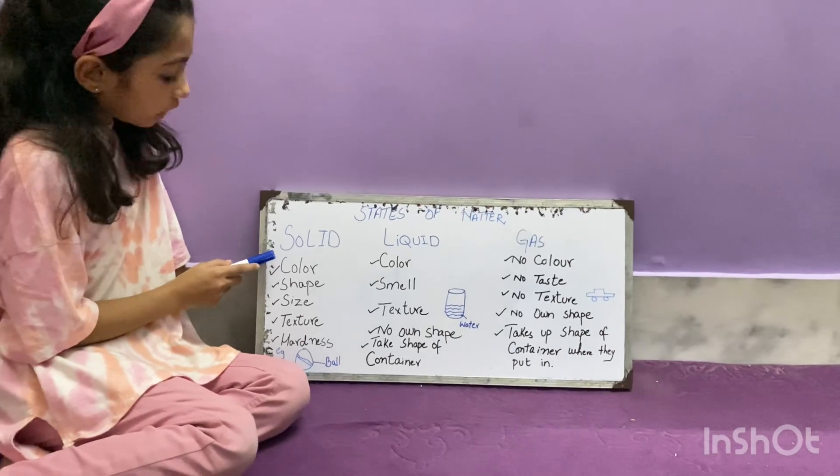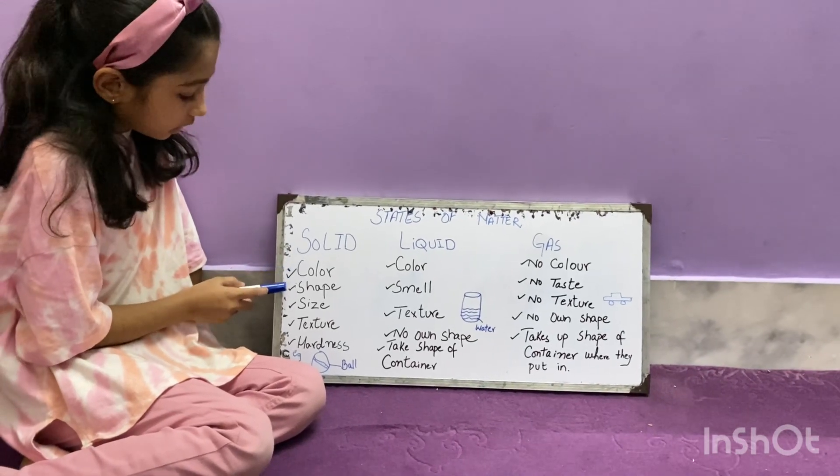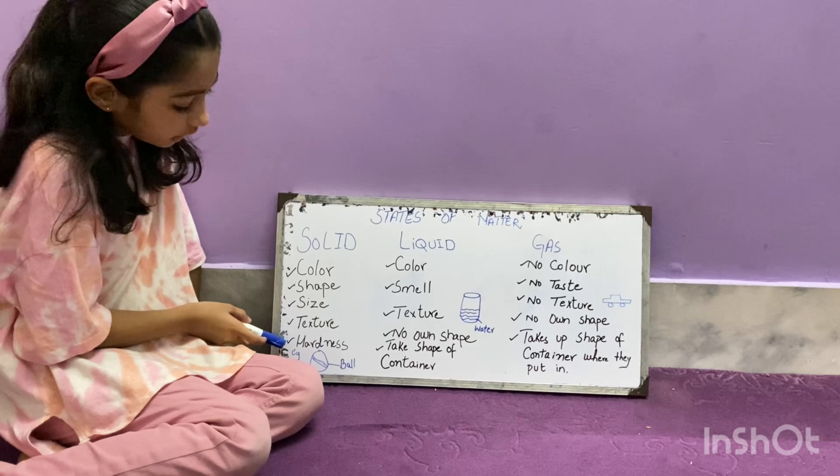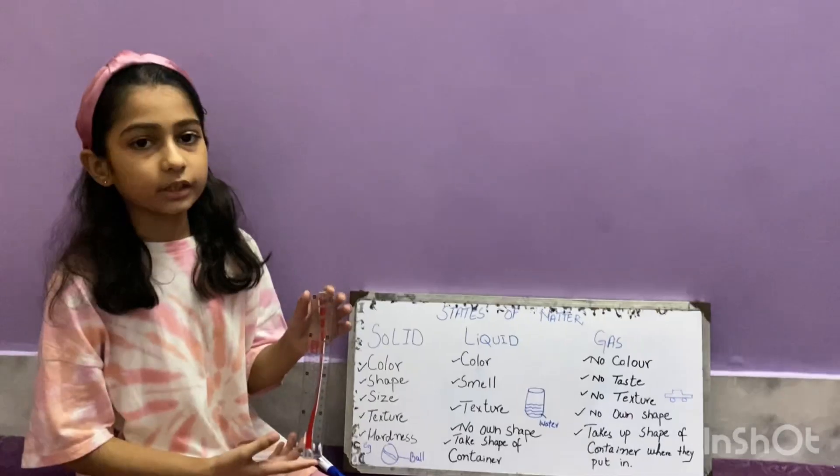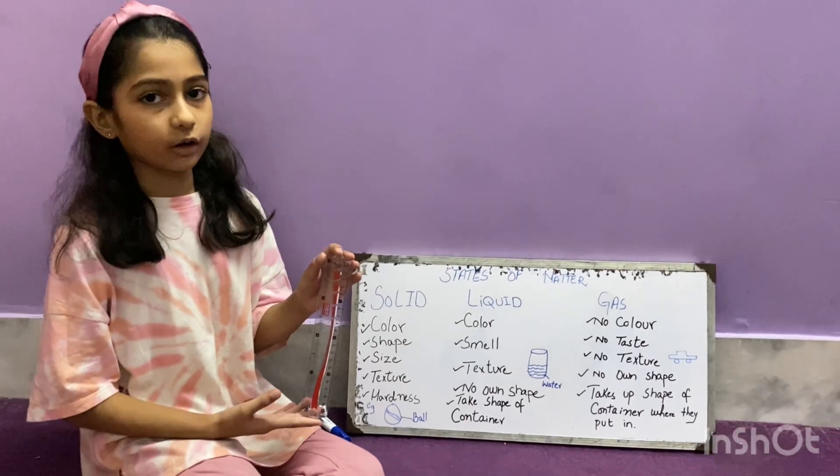Solid. Solid has their own color, shape, size, texture, and hardness. For example, board or scales. This is an example of solid.